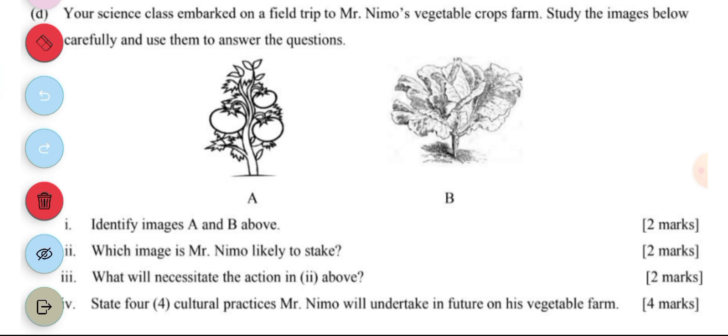Now to the next question. Your science class embarked on a field trip to Mr. Nemo's vegetable crops farm. Study the images below and carefully use them to answer the questions. You have A, you have B. The first question says: identify images A and B above.